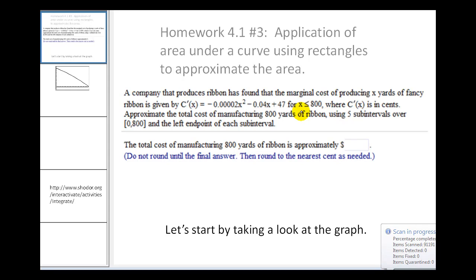A company that produces ribbon has found that the marginal cost of producing x yards of ribbon is given by the marginal cost function, where c prime of x is in cents. We want to approximate the total cost of manufacturing 800 yards of ribbon using five sub-intervals over the interval from zero to 800, and use the left endpoints of the sub-interval.